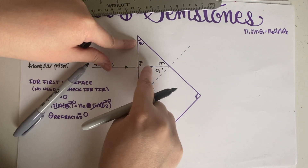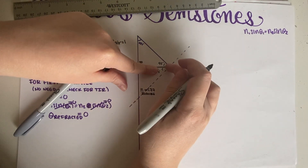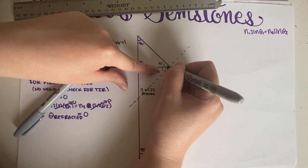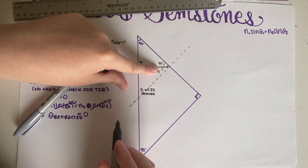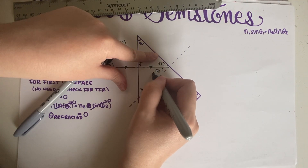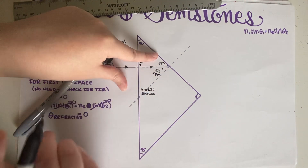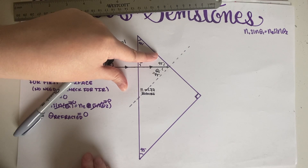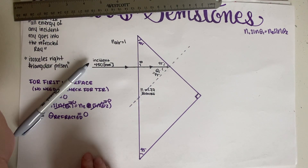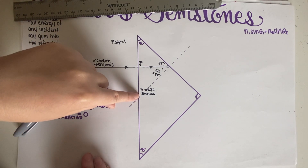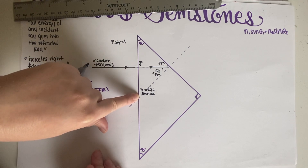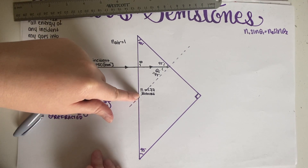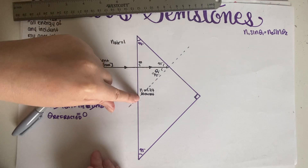Because these lines make 90 degrees from each other — that's the definition of the imaginary normal line — this angle is also 45 degrees. So my new incident angle at the second interface is exactly 45 degrees. This also means the supplementary angle on the other side is 45 degrees as well.